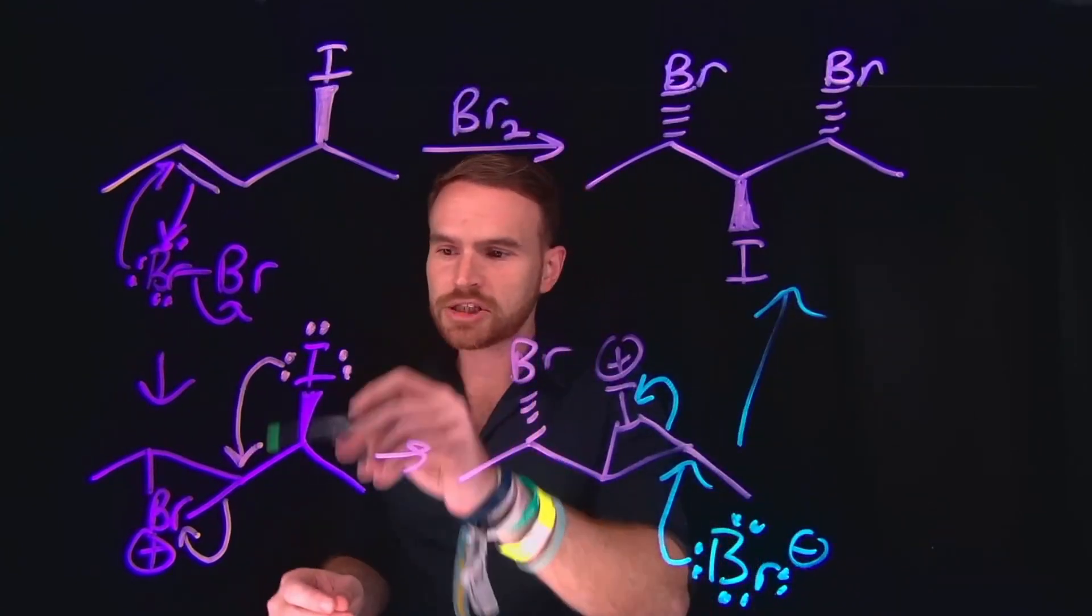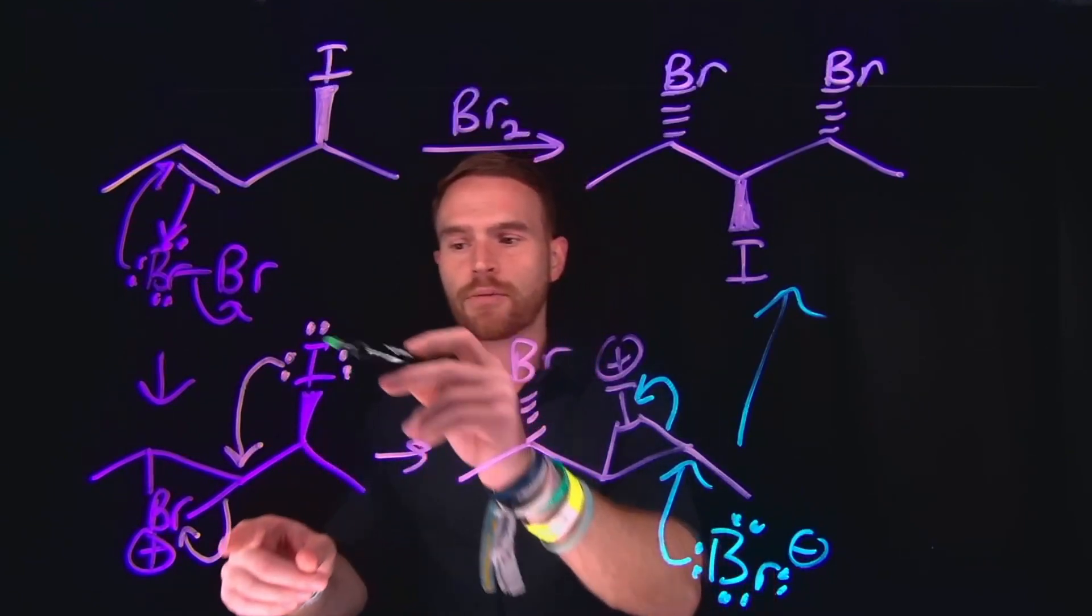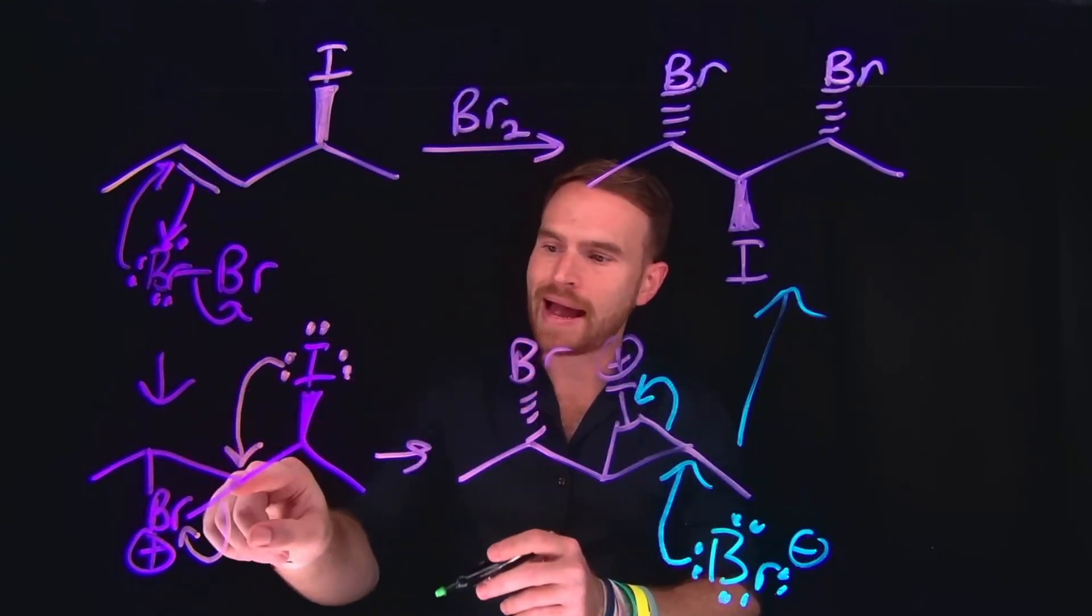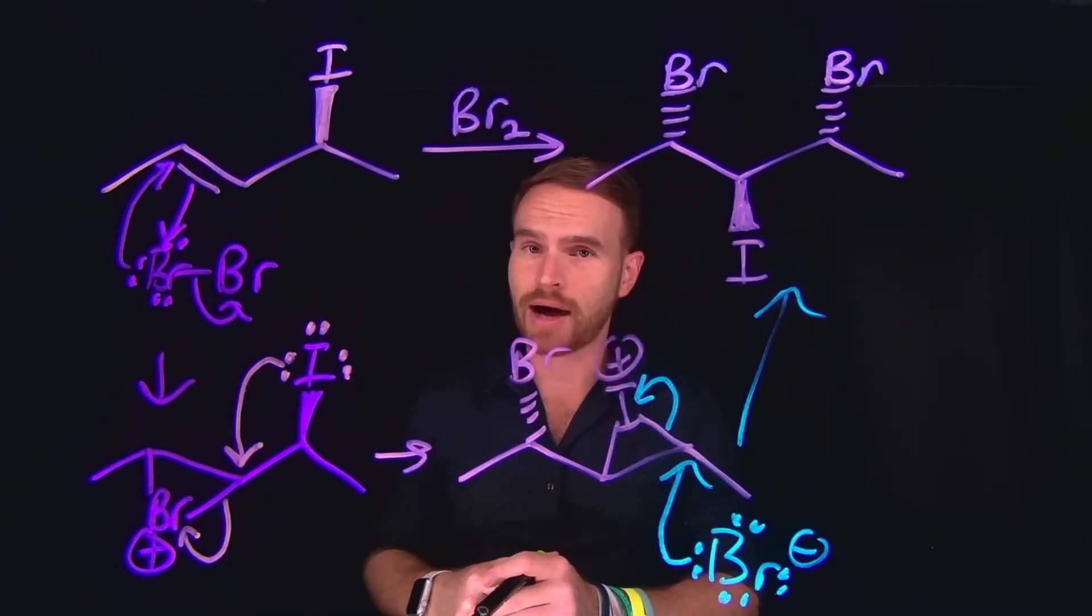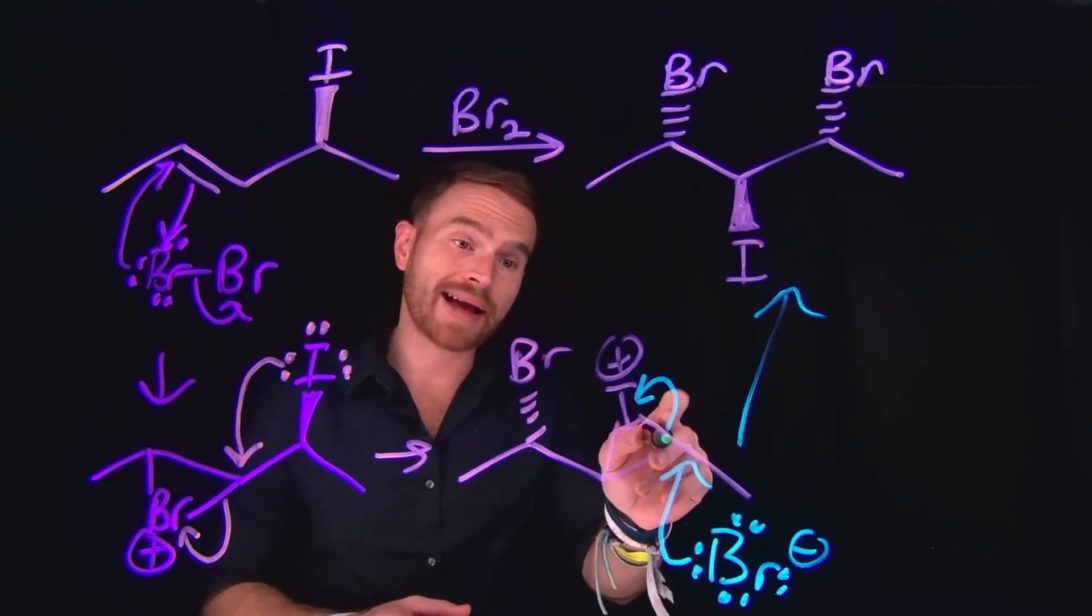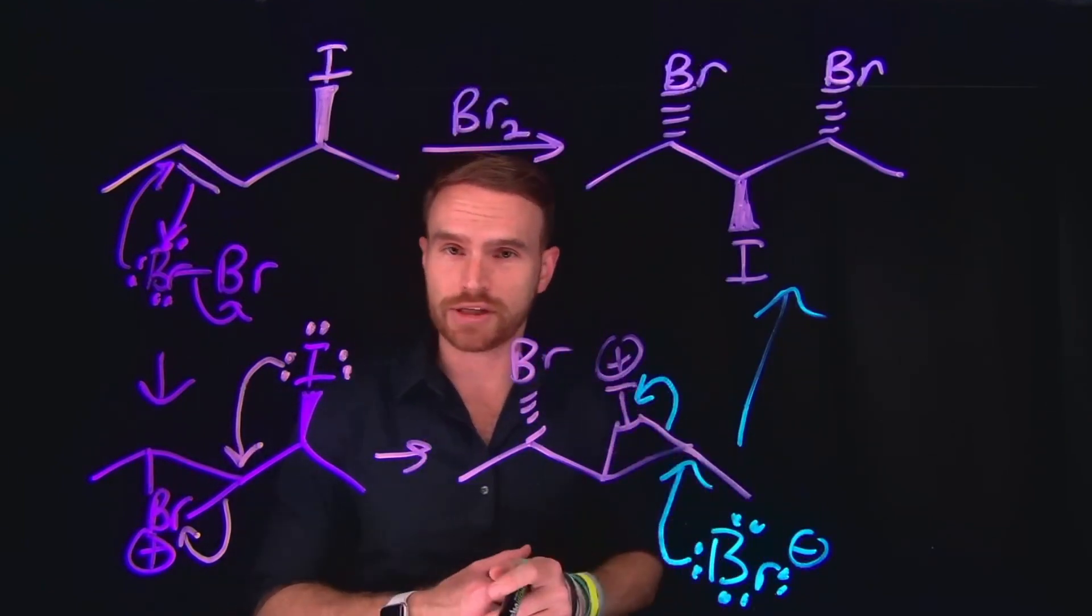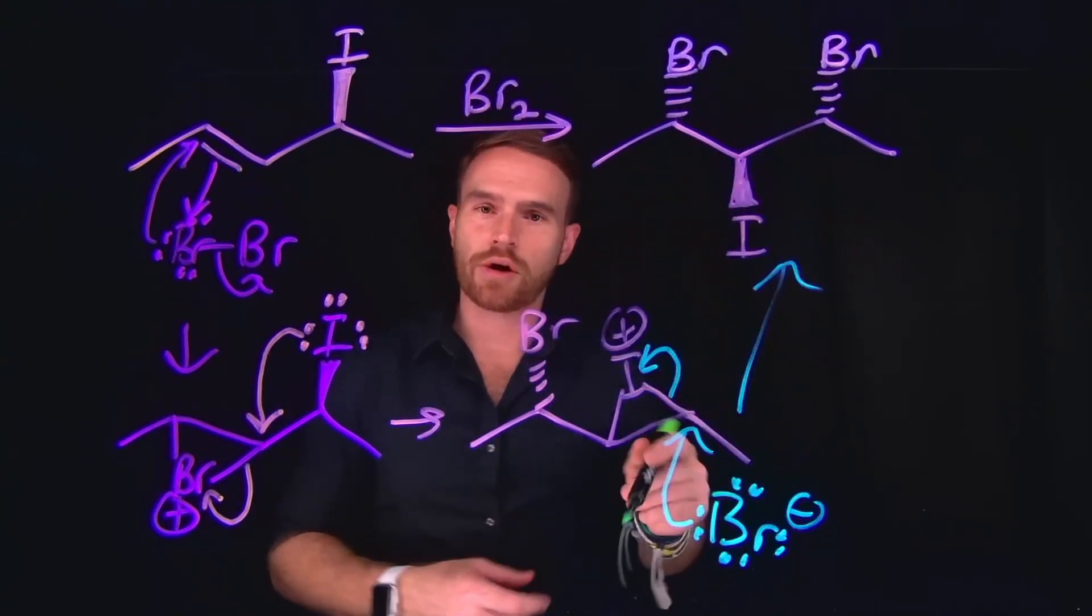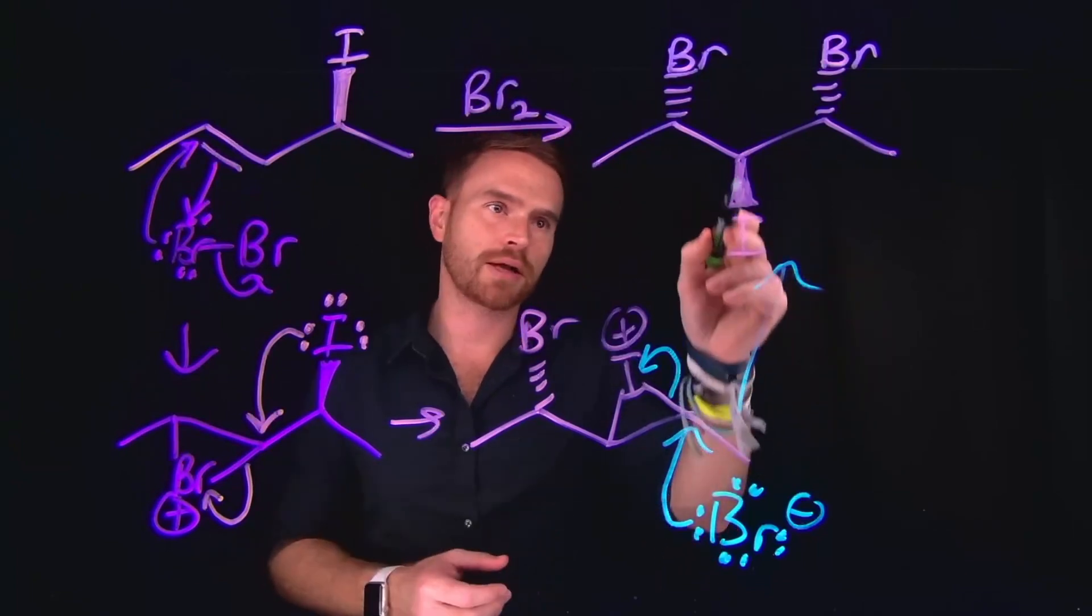Now importantly, when each of these steps occur, they're happening from opposite faces of the reaction. So the iodinium will come and attack on the backside of where this brominium ion is. And similarly, this bromide will come and attack on the backside of where this iodinium bridge is. And that's why we get the different stereochemistry where the bromine atoms are on the opposite side, stereochemically, from the iodine.